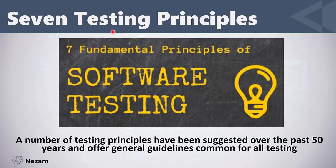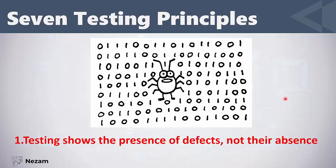The third section of chapter one talks about the seven testing principles. People over the past 50 years have suggested some principles that are considered as guidelines for software testing. The first principle is: testing shows the presence of defects, not their absence.